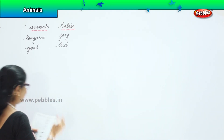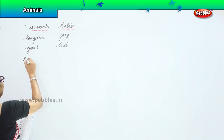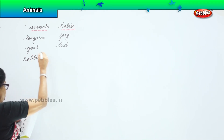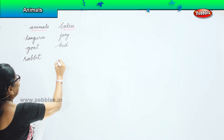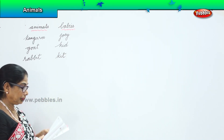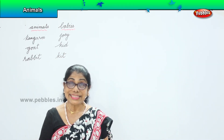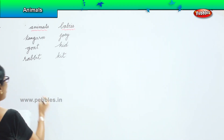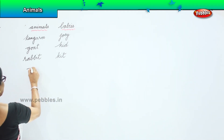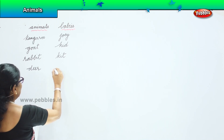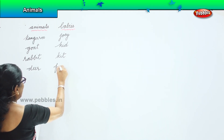And the rabbit. The rabbit's baby is called a kid. Deer. The young one of a deer is called a fawn.